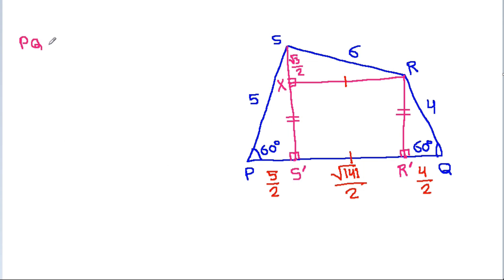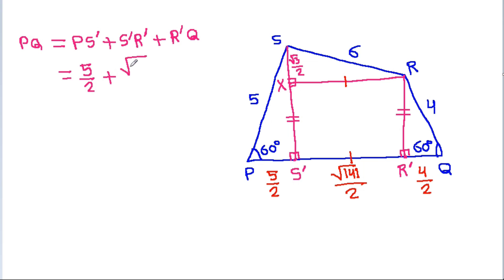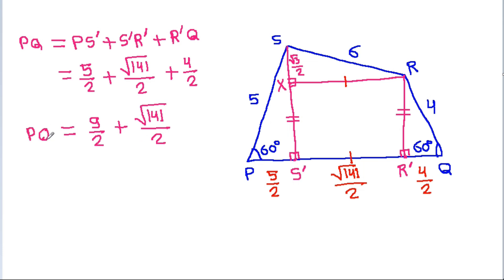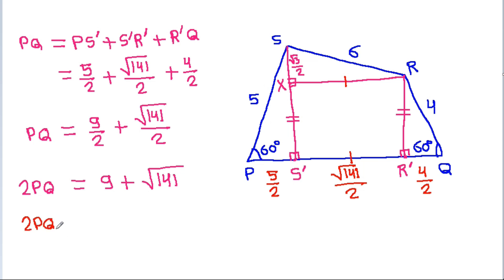Now PQ equals PS' plus S'R' plus R'Q, which is 5/2 plus √141/2 plus 4/2. So 5/2 plus 4/2 equals 9/2, giving PQ equals 9/2 plus √141/2. Therefore 2PQ equals 9 plus √141. We have given that 2PQ equals A plus √B, so A equals 9 and B equals 141, giving A plus B equals 150.